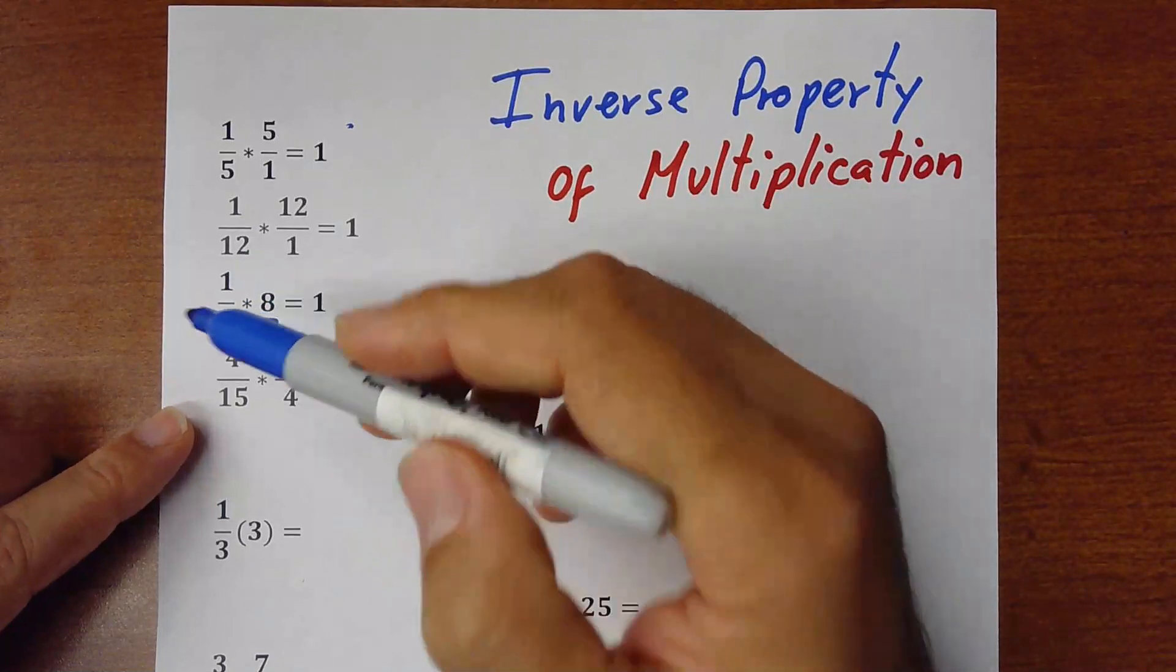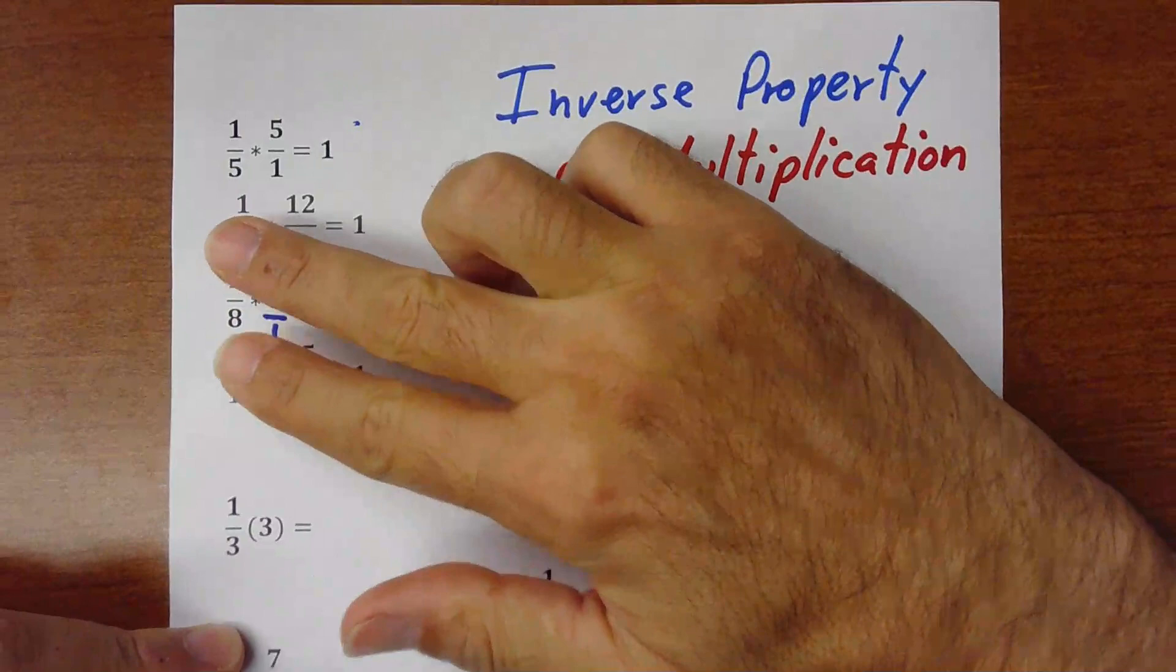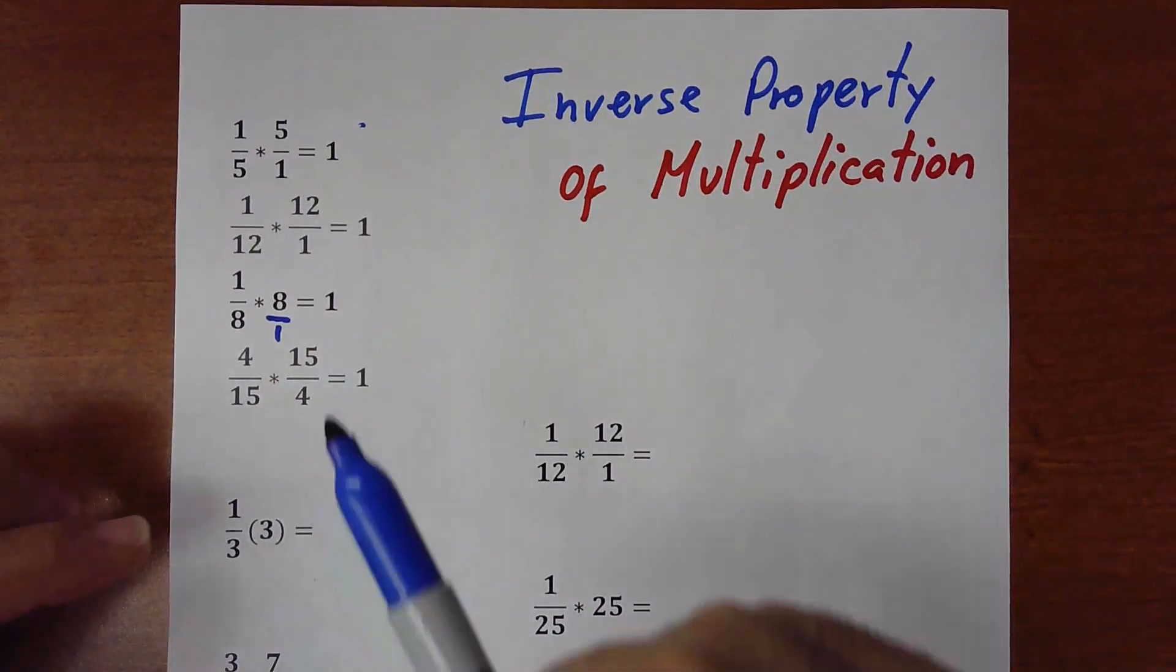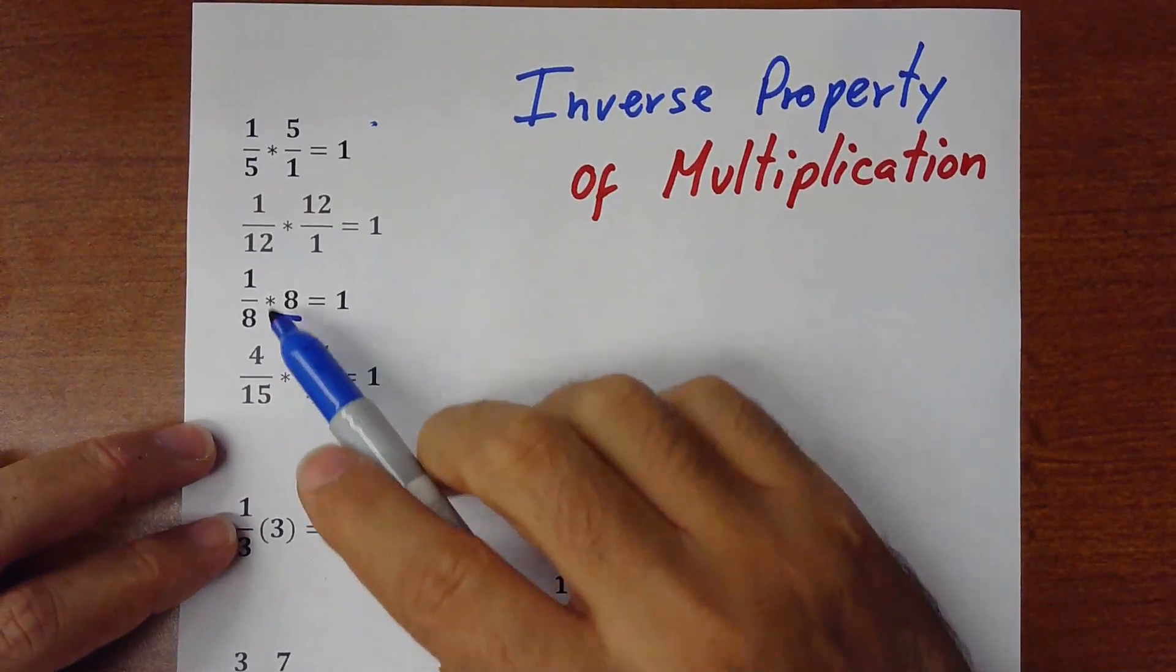And that's the inverse. You have here 1 over 8 and then you flip it, it would be 8 over 1. But we don't have to put the 1, we just put the 8. That's also equal 1.